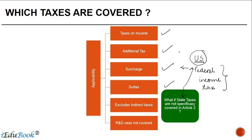We are going to discuss this aspect in greater detail when we go to the relevant articles in the context of which these decisions were given. With that, we complete Article 2(1). We are now going to look at Article 2(2) to understand what are taxes on income and taxes on capital.